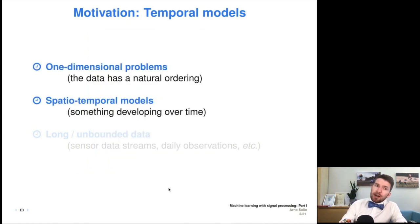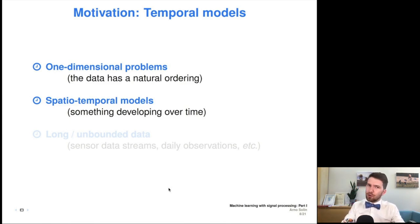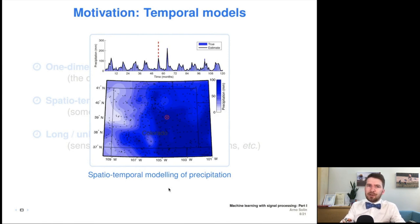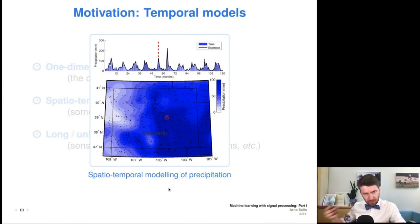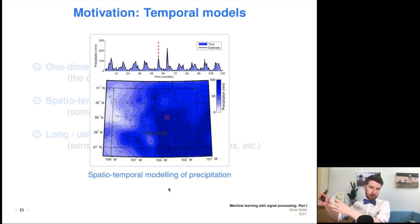Of course, you can have something more complicated than just a single time series. You can have something that evolves over time, and you just observe snapshots for different time points. Those are referred to as spatiotemporal models — this could also be like multi-output time series. For example, the easiest example I can think of is the weather. Here we have the amount of rain in Colorado for different months over several years. The bottom figure shows the amount of rain in different regions, and that of course changes for different months. It's a spatiotemporal problem because there are both spatial aspects and temporal aspects governing the rainfall.